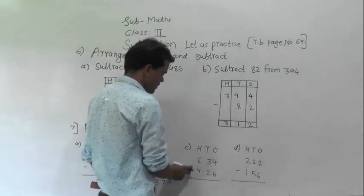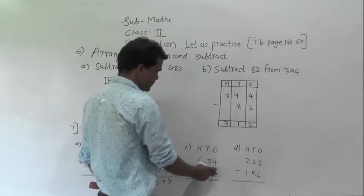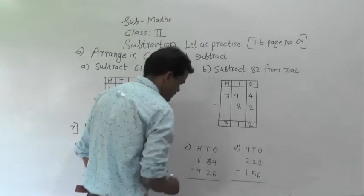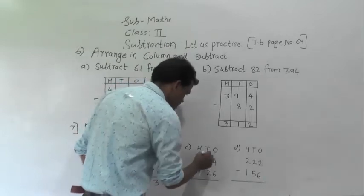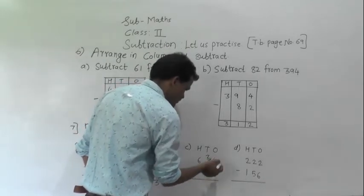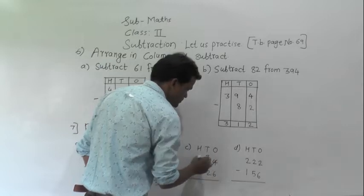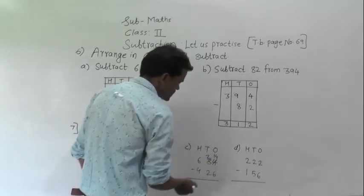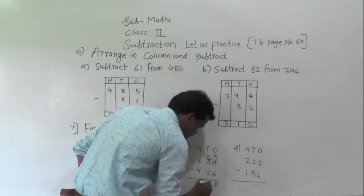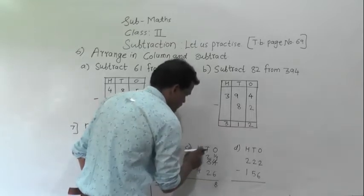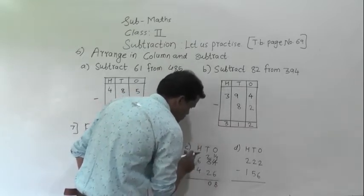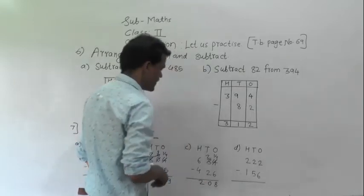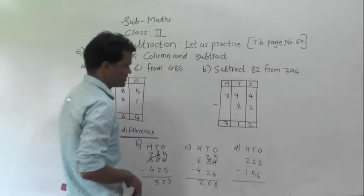Next: 634 minus 426. Here 4 minus 6 is not possible, so regroup 3 tens into 2 tens and 10 ones. Add 10 ones to 4 ones to get 14 ones. 14 minus 6 is 8, then 2 minus 2 is 0, 6 minus 4 is 2. So 208 is the answer.